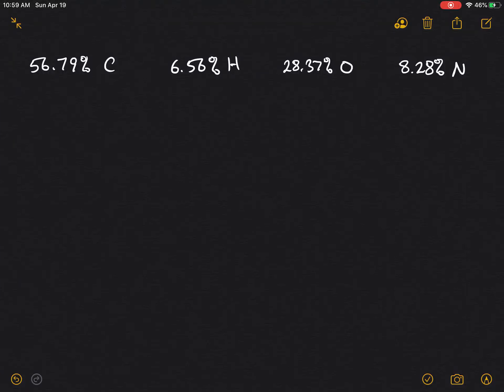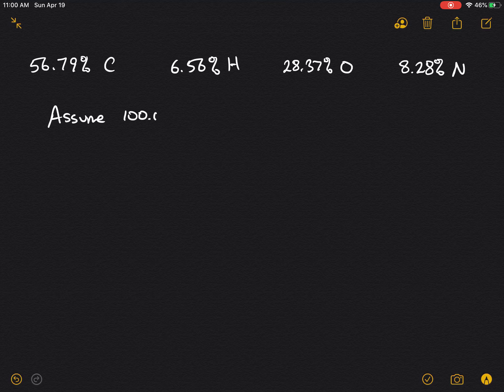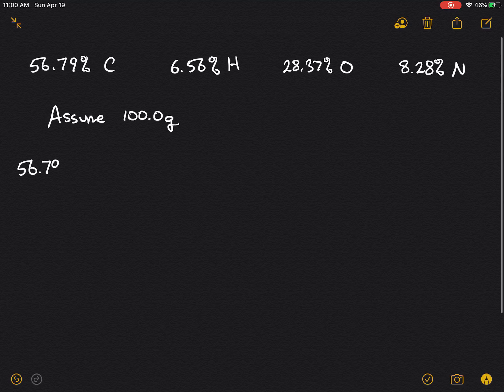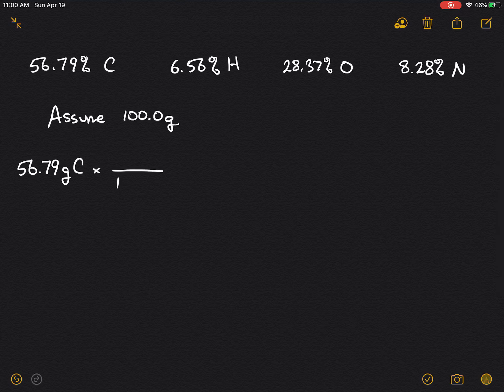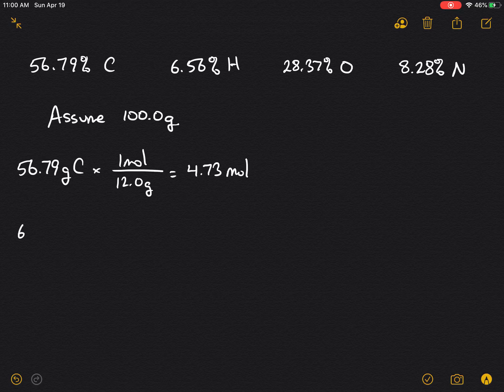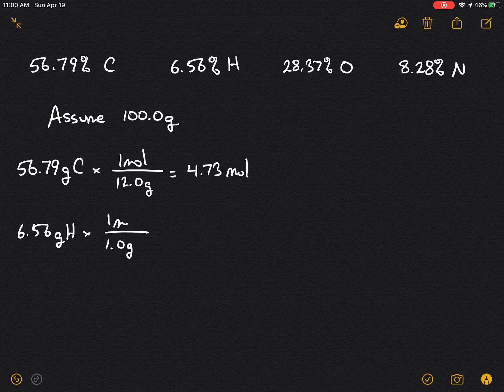We're told that adrenaline contains the following percentages. We're going to assume 100 grams of adrenaline and that will yield 56.79 grams of carbon. Convert to 4.73 moles. We have 6.56 grams of hydrogen, 1 gram per mole to yield 6.56 moles.